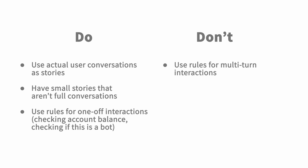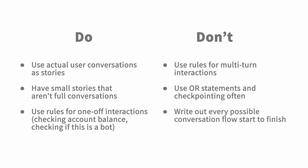Avoid using rules for really complex multi-turn interactions. If you do that a lot, you end up with basically a very complex state machine — a very convoluted tree diagram — that gets really rough to maintain quickly, especially on a team. Use OR statements and checkpointing sparingly; too many checkpoints make things very complex to track. Don't feel you have to write out every possible conversational flow — the machine learning policy helps capture edge cases. And as much as possible, start user testing immediately to see what users actually do and improve accordingly.